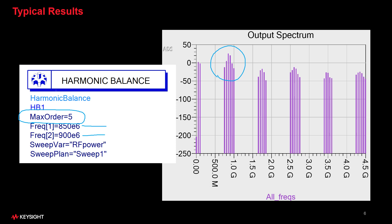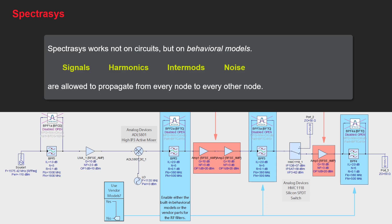Now let's look at spectrosys, also known as RF system. This is a spectral domain solver. And the way it works is it allows all signals, harmonics, intermods, and noise to propagate from every node to every other node in every direction.